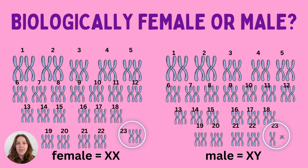The reason chromosomes have this X shape — and this is more of an A level thing — is because at that point they are showing their sister chromatids. When chromosomes are copied, they form something called a sister chromatid, which is like a copy of itself, held together by something called a centromere. You don't need to know about chromosome structure at GCSE, but it's good to know if you're thinking about A levels. All you need to know at GCSE is that the X chromosome is found in both males and females — women will have two, and men will have one along with a Y chromosome.